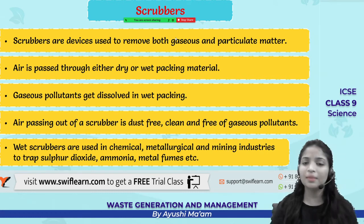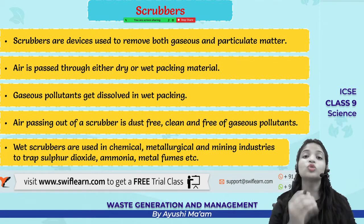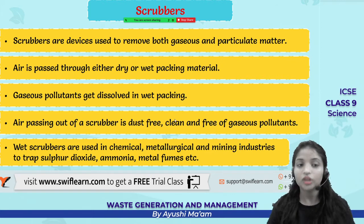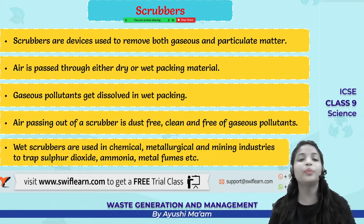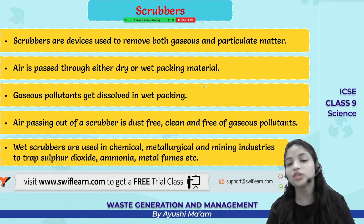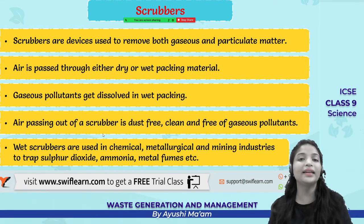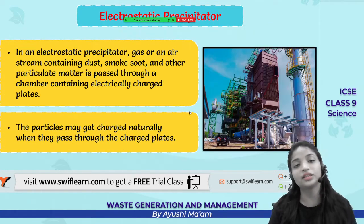Next we have scrubbers. A scrubber is like a device — joh aapki gases release hoti hain, usmein gases toh hoti hain plus kuch particulate matter bhi hota hai — small small particles. Toh yeh jo gaseous pollutants hoti hain, they get dissolved in the wet packing. Toh jab air nikalti hai scrubber se, that air is actually dust-free and clean, aur in pollutants se alag hoti hai. Kyunki air joh bhi aise nikalti hai, usko pass karaya jaata hai scrubber se, aur scrubber ke baad jo nikalti hai, that is dust-free clean. Wet scrubbers are used in mining and metallurgical industries where sulphur and other toxic gases are trapped, so clean gaseous output is released.